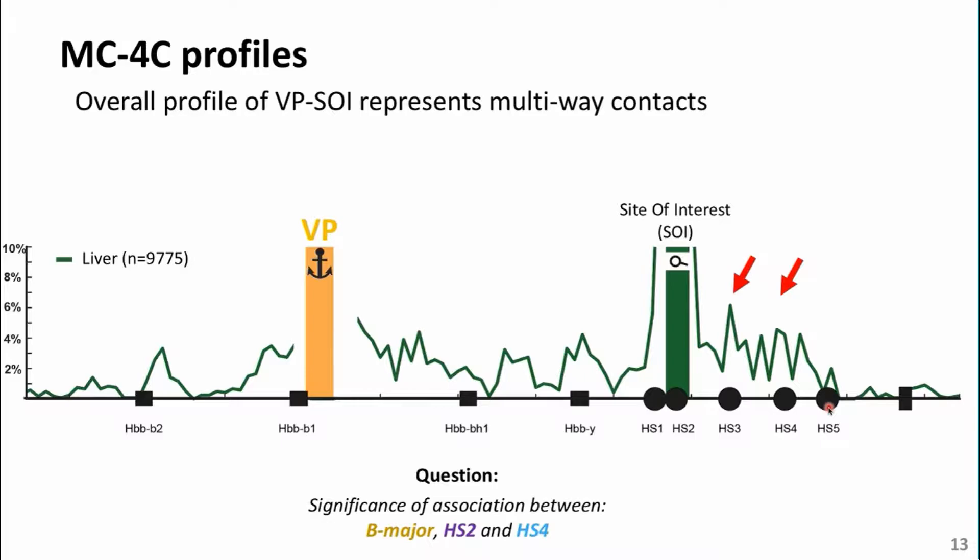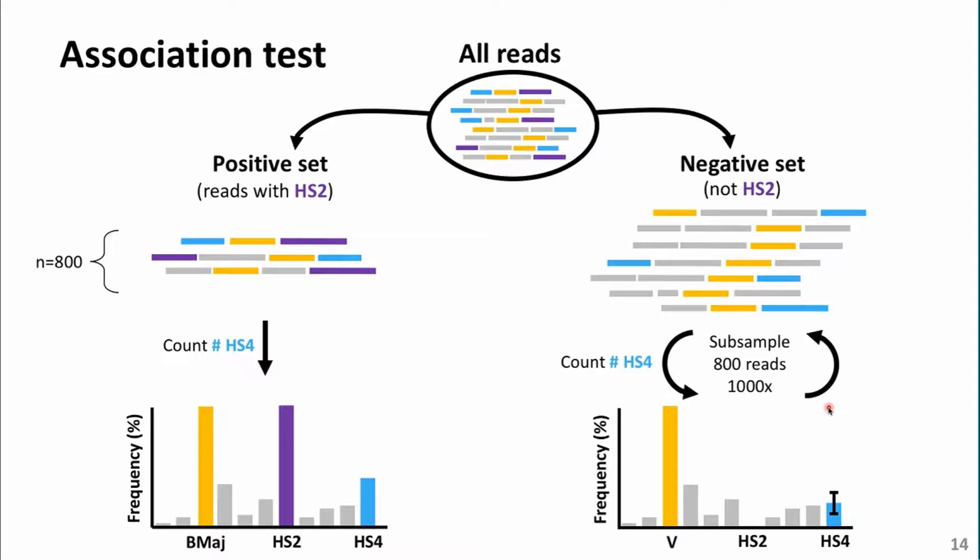The missing piece is that we cannot tell if this observation is more than expected by chance. We require an association test that can tell us the significance of association between beta-major, HS2, and, for example, HS4. In order to answer this question, we devised the following association test. We separate our reads into two sets: a positive set and a negative set.